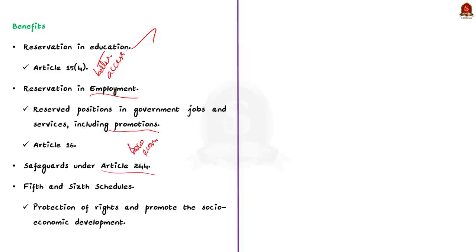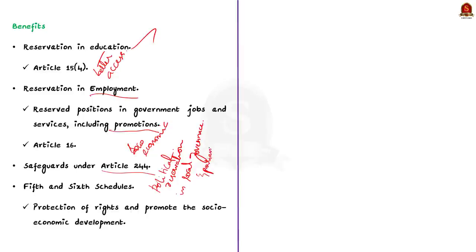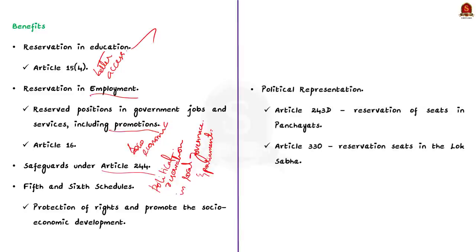Finally, there is political representation. Article 243D ensures reservation of seats for Scheduled Tribes in panchayats, promoting participation in local governance. Article 330 reserves seats in the Lok Sabha for Scheduled Tribes, allowing their representation in the national parliament as well. These are the important points to remember about the process of including tribes in the ST list and the benefits after inclusion.